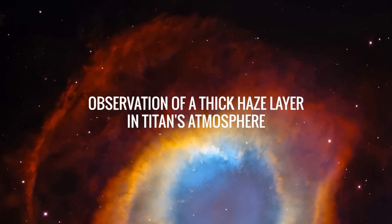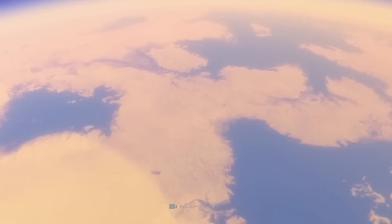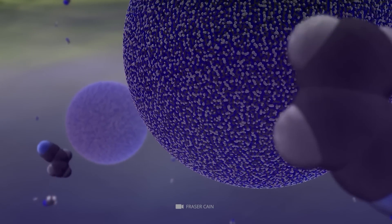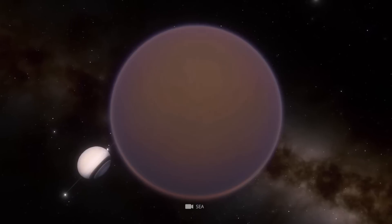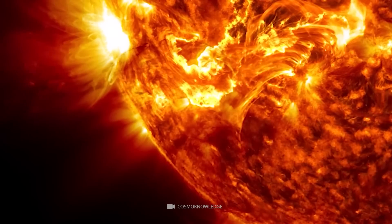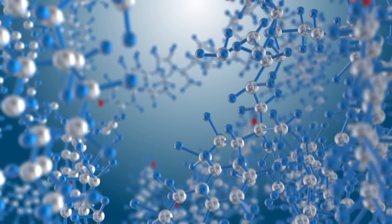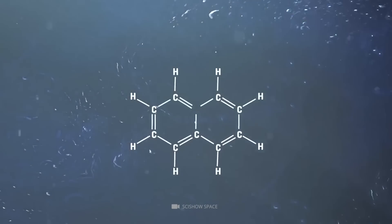Observation of a thick haze layer in Titan's atmosphere. The observation of a thick haze layer in Titan's atmosphere is a significant discovery that has provided new insights into the complex chemistry that occurs on this enigmatic moon. The haze layer is composed of complex organic molecules that are thought to be formed through the breakdown of methane molecules by ultraviolet light from the Sun. This process results in the production of a wide range of organic compounds, including nitrogen, carbon, and hydrogen. The haze layer is so thick that it obscures the moon's surface.